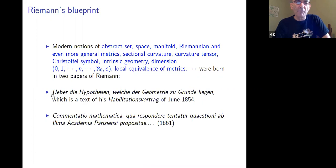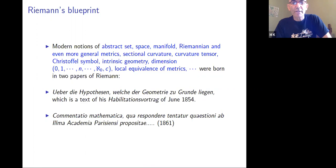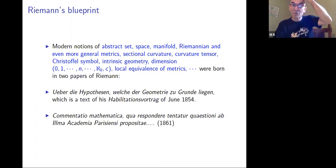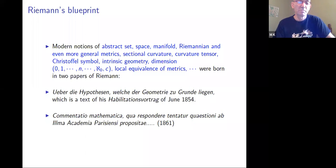The first paper is the one everybody knows and talks about — it's a much more important paper with much heavier content. All the ideas of abstract space, general notions of manifold, Riemannian and more general types of metrics, sectional curvature, curvature tensor, Christoffel symbols, ideas of intrinsic versus extrinsic geometry, dimension, even infinite dimensions, continuum dimensions, and the local equivalence problem of metrics — all of these things were born in Riemann's two papers.